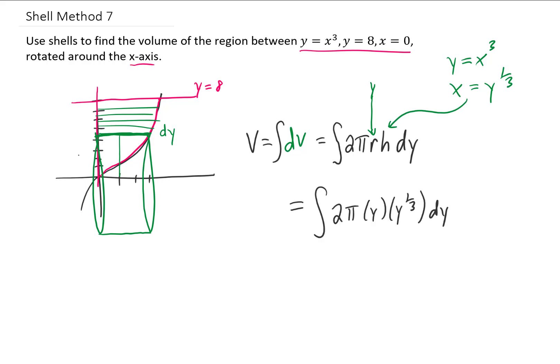Let's take a look at our integral now. Our limits of integration will be the smallest and largest values of y in the region. The smallest value of y is going to be zero, and the largest value of y will be eight. We can simplify this integral a bit by pulling the 2π out, and by multiplying y times y to the 1/3.